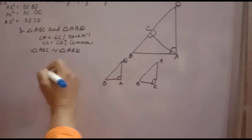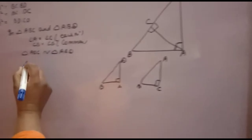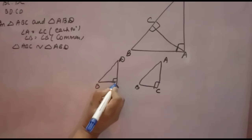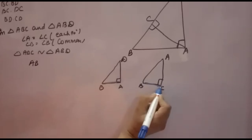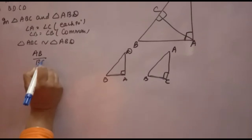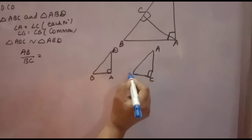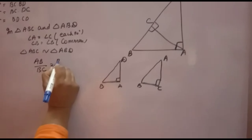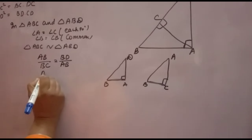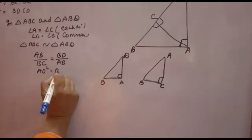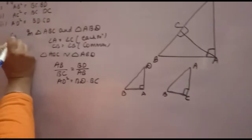Now if triangles are similar, you can write the ratios of their sides. You want AB, so you will take AB first. Corresponding to AB, BC is there — so you write AB over BC. Then again you want AB, so corresponding to that you take BD — so BD over AB. Now AB into AB gives AB², which equals BD into BC. This is what you had to prove. So this is the first part.